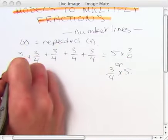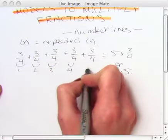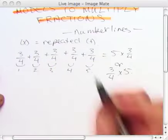And this is because we've got 1, 2, 3, 4, 5 sets of 3/4.